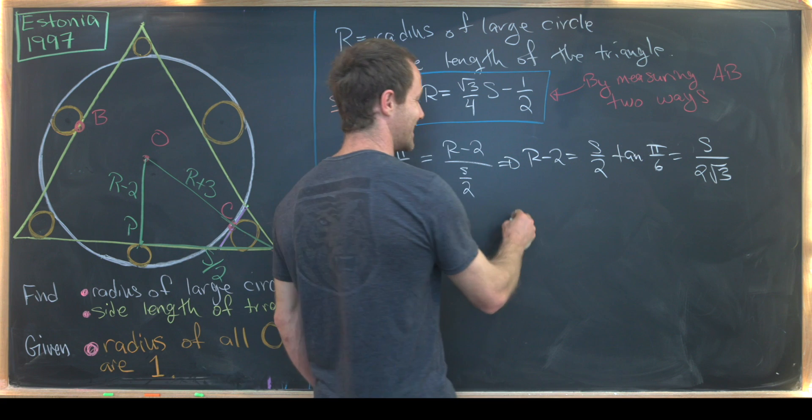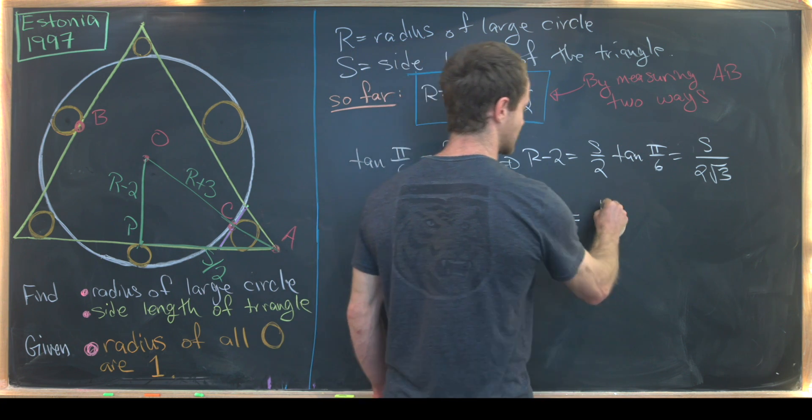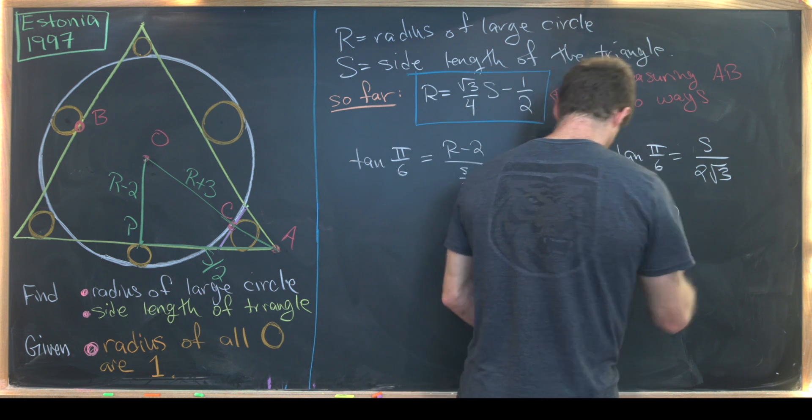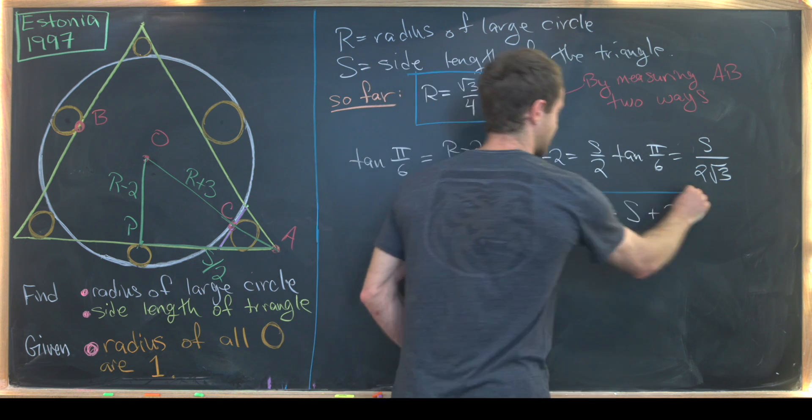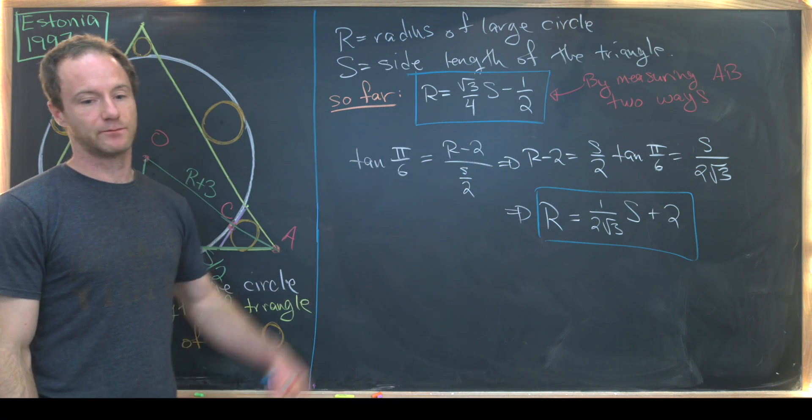So that means we've got another linear relationship for R in terms of S. So we've got R is one over two root three times S plus two, like that. So now we're ready to start putting those together.